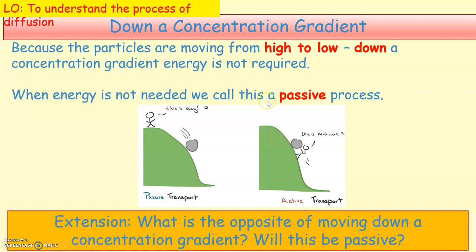What is the opposite of diffusion, or the opposite of moving down a concentration gradient? If you are not moving down a concentration gradient, you are moving against it — that is active transport, because you require energy to move up a concentration gradient, whereas diffusion requires no energy.